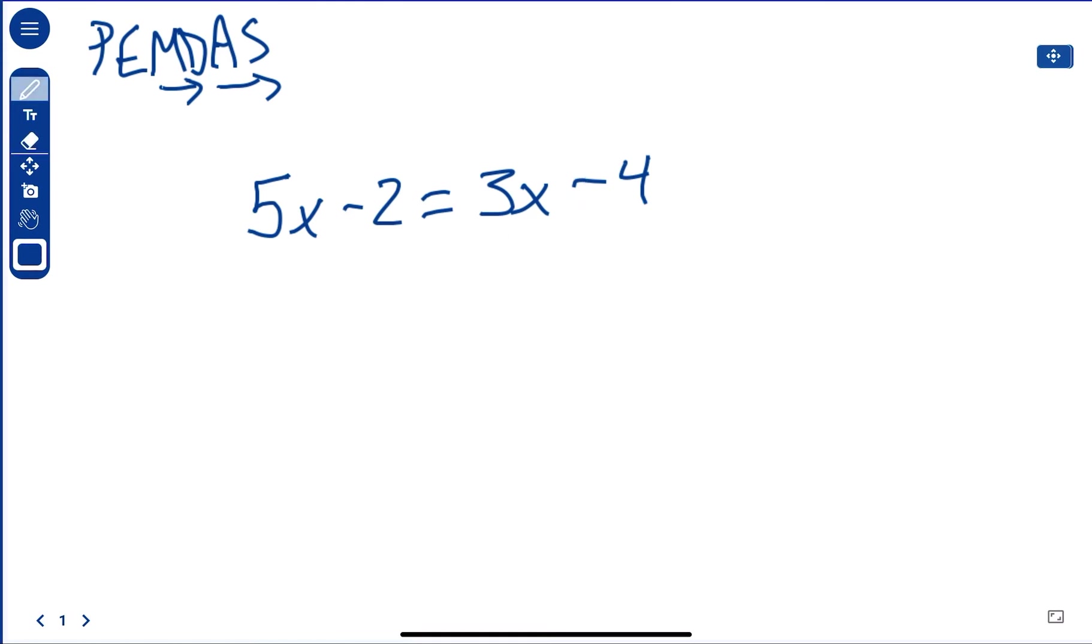Okay, so we're going to get our... The way I do it is I want to get my X to be positive. So that means I wouldn't subtract 5X here and 5X here because that's going to give me a negative 2X. So I don't want to do that.